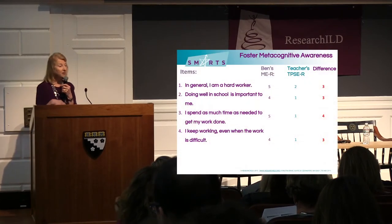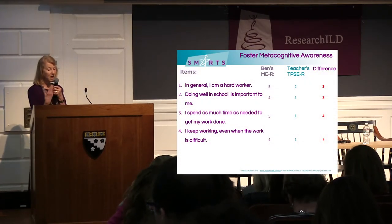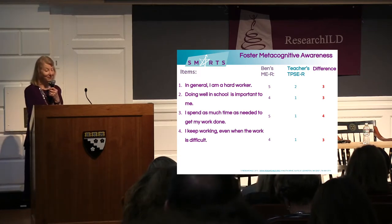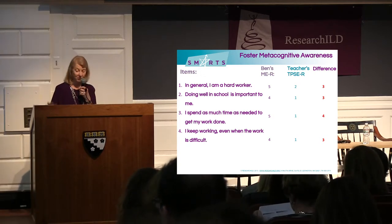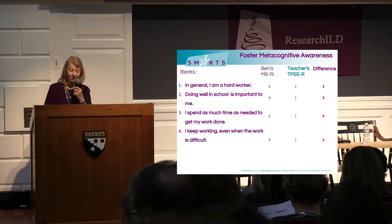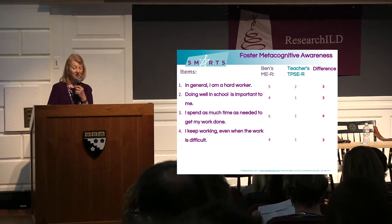This begins the process of metacognitive awareness — getting him to sit and think about his issues. Then we compare teacher ratings. Ben says he's a hard worker; teacher says no — a discrepancy of three on a five-point scale. 'Doing well in school is important to me' — Ben rates himself four, teacher rates him one. 'I spend as much time as needed to get my work done' — Ben says absolutely, teacher says he doesn't spend any time at all. They have totally different views — from different planets — about the same kid.